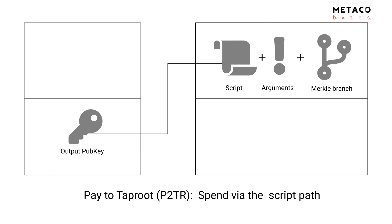The reason you need to provide the Merkle branch is that the output public key can commit to several scripts at once, so you need some kind of proof that this specific script was indeed committed to by the output public key. We'll see exactly how that works.